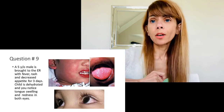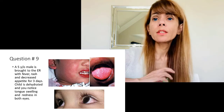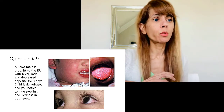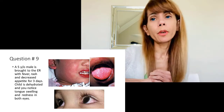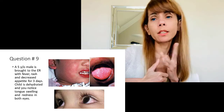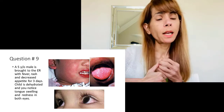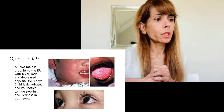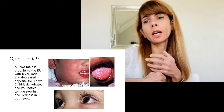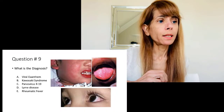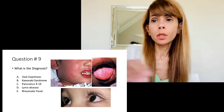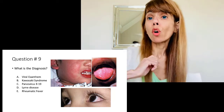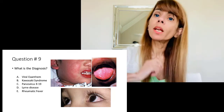Question number nine is now a case scenario. We're done with identifying lesions. This is a pediatric patient, five years old, brought to the emergency room. The mother describes fever, redness on the face, strawberry tongue or red-colored tongue, redness in the eyes, and the child is a little bit dehydrated. The question asks what the diagnosis is. Of all the answer choices, the correct answer is Kawasaki syndrome.